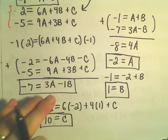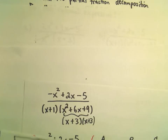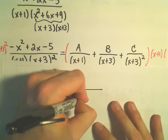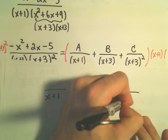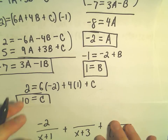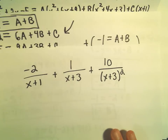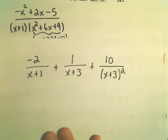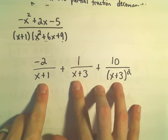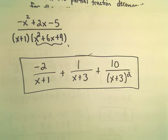Now we can write down our partial fraction decomposition. We had a over x plus 1, plus b over x plus 3, plus c over x plus 3 squared. With a equals negative 2, b equals positive 1, and c equals positive 10, that's our final answer. If you had time, you could get common denominators, put it all back together, and you would see you get the original expression back.